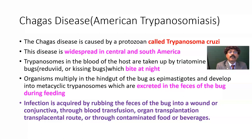Chagas disease is caused by a protozoan called Trypanosoma cruzi, so it is a protozoal disease. The disease is widespread in Central and South America, including the southern part of the United States, extending up to the southern part of Argentina.